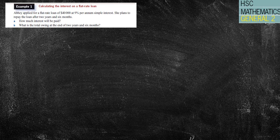Okay, so Abby applied for a flat rate loan of $40,000. Well, that's the first important piece of information. At 9% per annum, that's the next important piece of information. And simple interest, which is obviously very important because we might have compound interest later on. She plans to repay the loan after two years and six months. So that's going to be 2.5 years. So you can see I've underlined the important information.